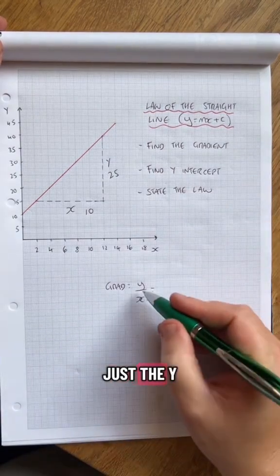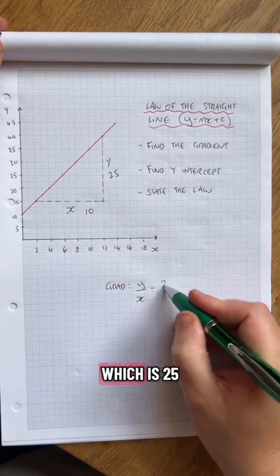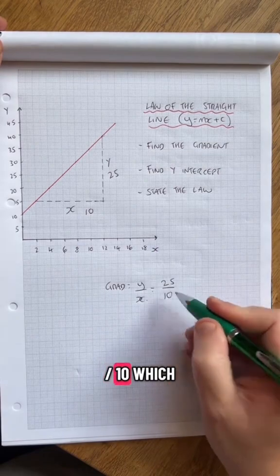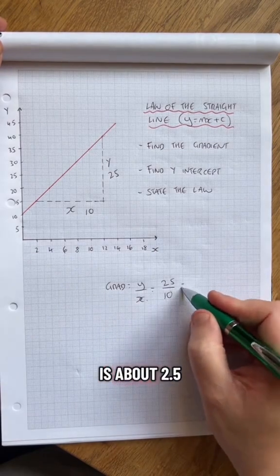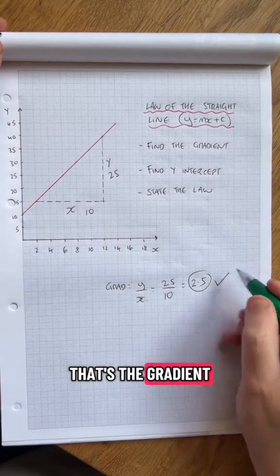So the gradient is just the y over the x, which is 25 divided by 10, which in my book is about 2.5. That's the gradient.